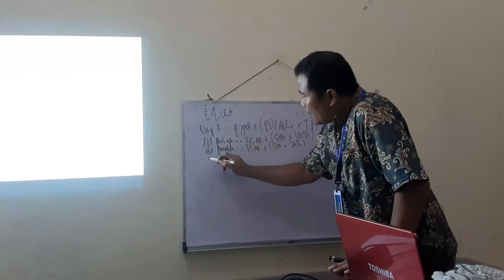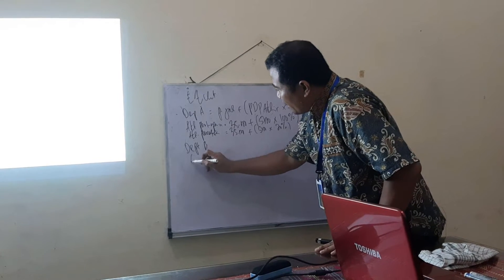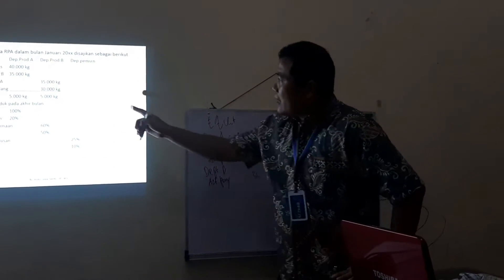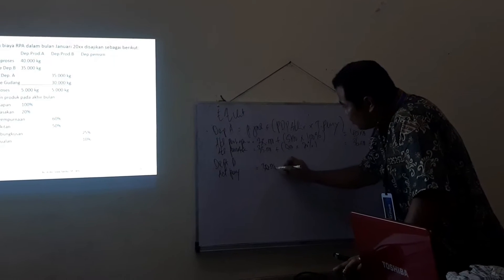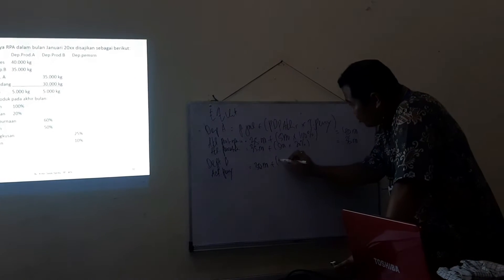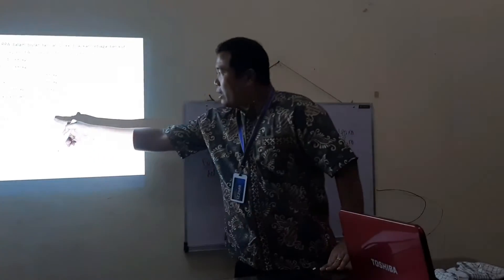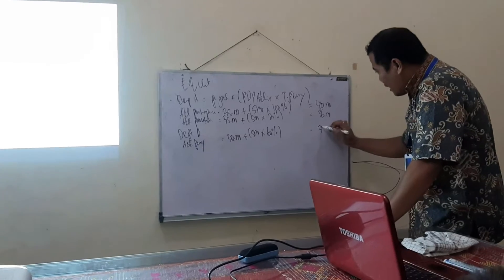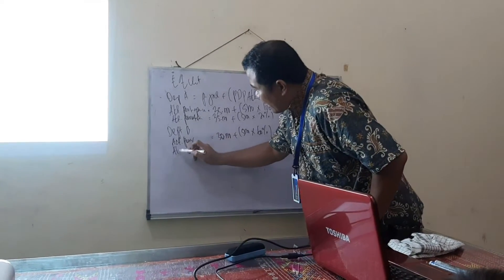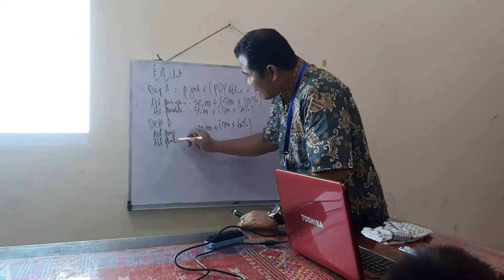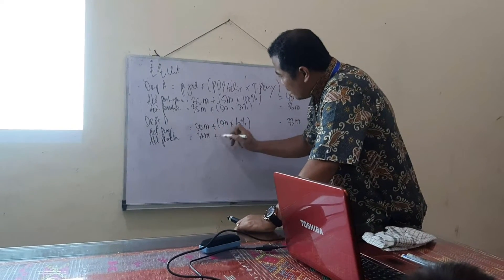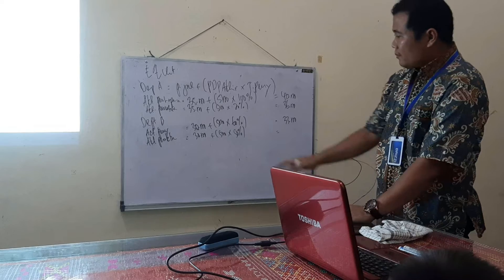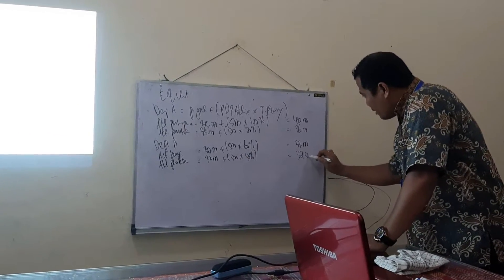Masuk ke Departemen B. Aktivitas Penyempurnaan = 30.000 ditambah 5.000 dikali 60% = 33.000. Aktivitas Perakitan = 30.000 ditambah 5.000 dikali 50% = 32.500. Aktivitas Pembungkusan = 30.000 ditambah 5.000 dikali 25% = 31.250. Aktivitas Penjualan = 30.000 ditambah 5.000 dikali 10% = 30.500.